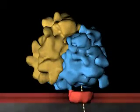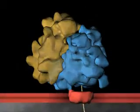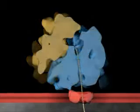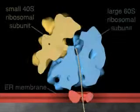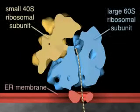This is best seen in this cross-section, in which the front half of the ribosome is removed from the model.